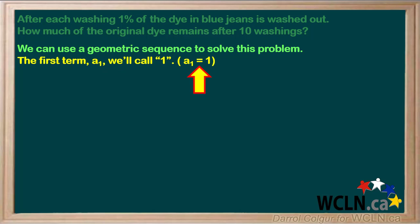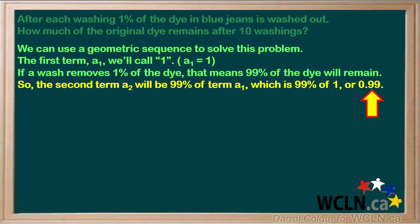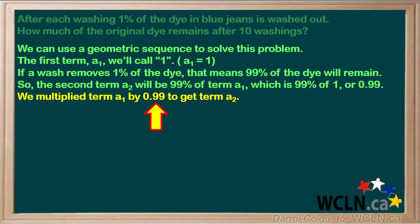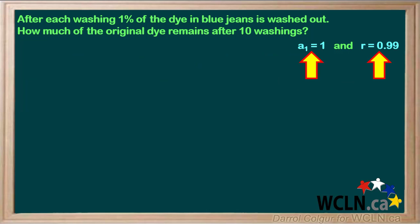The first term, A1, we'll call 1, so A1 equals 1. If a wash removes 1% of the dye, that means 99% of the dye will remain in the jeans. So the second term, A2, will be 99% of term A1, which is 99% of 1, or 0.99. We multiplied term A1 by 0.99 to get term A2. Therefore, the common ratio R equals 0.99. We'll make a note that A1 equals 1 and R equals 0.99.